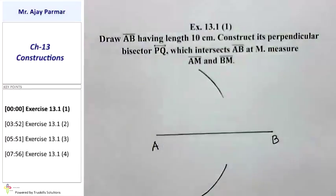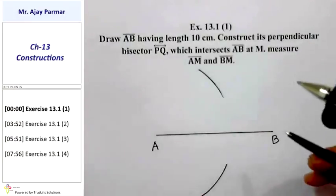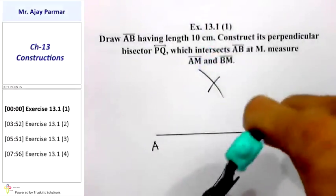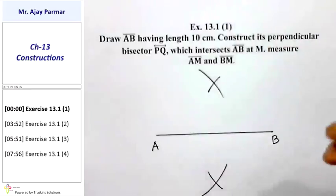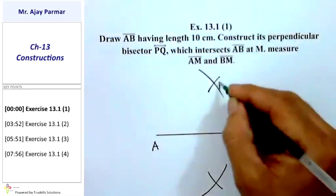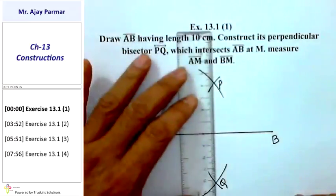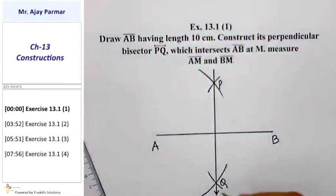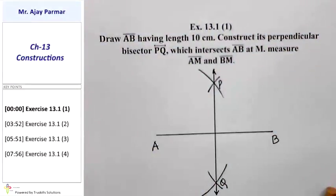I am not going to change any radius. Keeping the radius the same, I am going to take point B as the center, and with the same radius I shall intersect the previous arcs. Supposing these arcs intersect each other at point P and point Q. I will draw a line passing through point P and point Q, and that line is the perpendicular bisector of line segment AB. Line segment PQ is the perpendicular bisector of line segment AB.